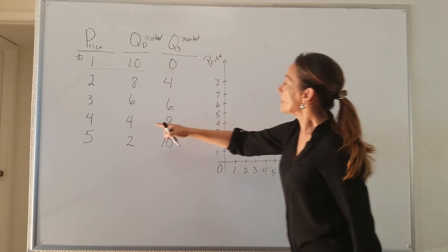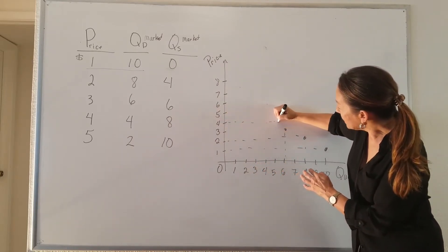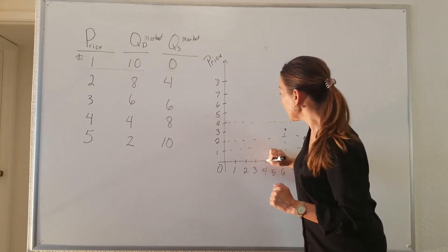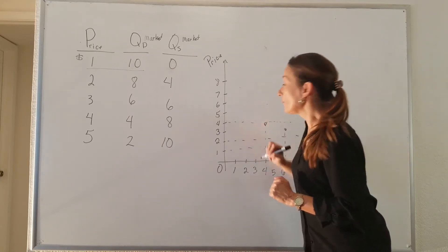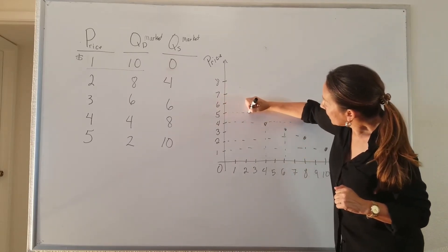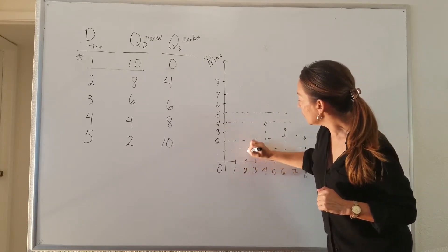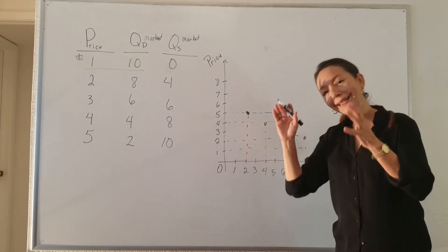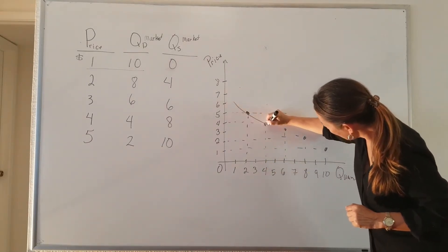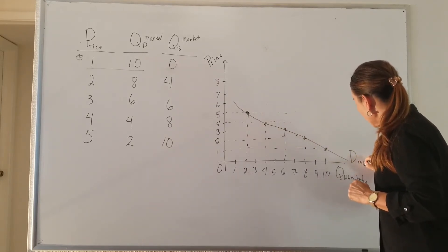At a price of $4, I put little dots to guide myself — if you have graphing paper, that's even better. At a price of $4, 4 units are demanded. And at a price of $5, 2 units are demanded. If I connect these dots, I have my market demand curve.